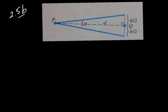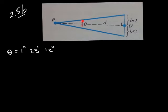For part A, find d when theta is 1 degree, 23 minutes, 12 seconds — that's the degree measure of theta. Go ahead and change this to a decimal using your calculator, and it ends up being 1.3867 degrees. So that's what theta is in degrees.